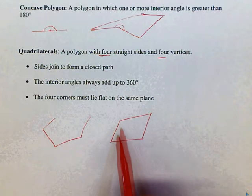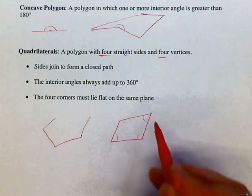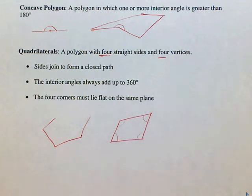The interior angles, all four of these, must add up to 360. We already saw in a triangle, they add up to 180. Now in a quadrilateral, they add up to 360. And the four corners must lie on the same plane. Basically, we have a two-dimensional object. The second we try to go 3D, we are no longer dealing with a quadrilateral.